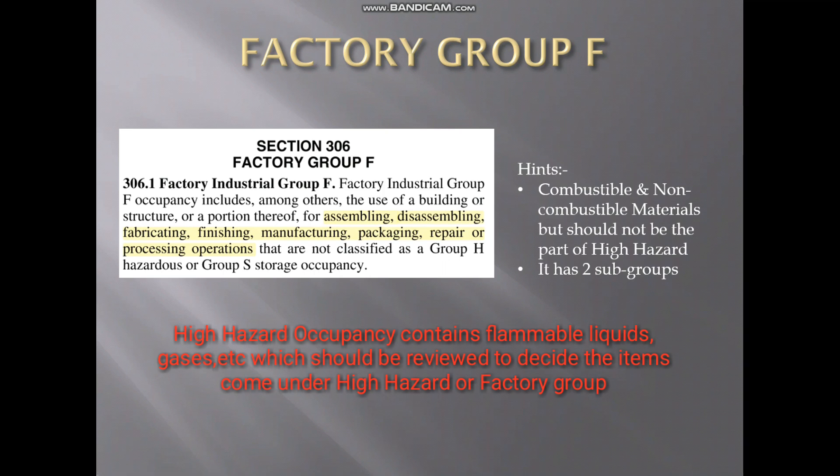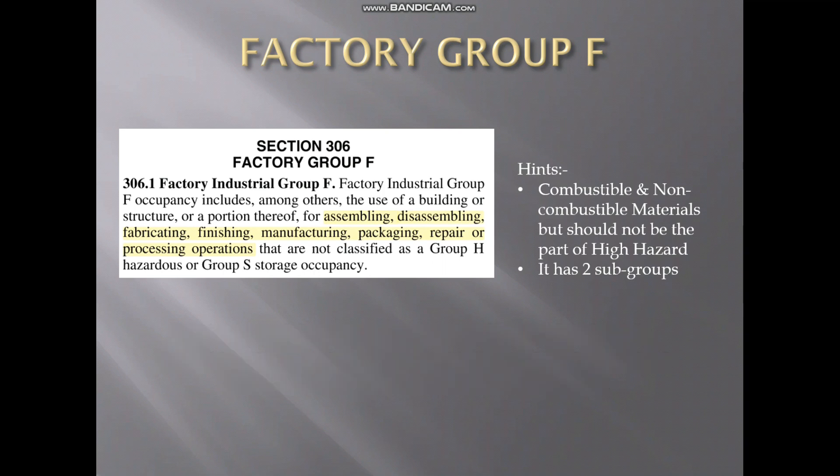Factory Group F has two subgroups. Subgroup F1 is moderate hazard, which covers combustible materials — but not part of high hazard. Examples include furniture, leather products, and bicycles.